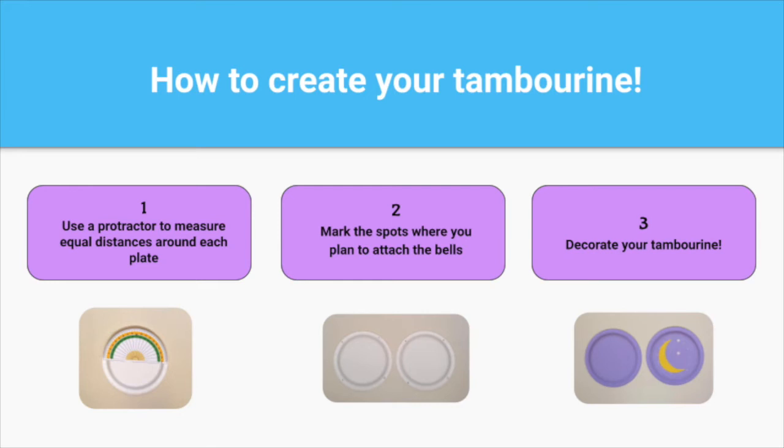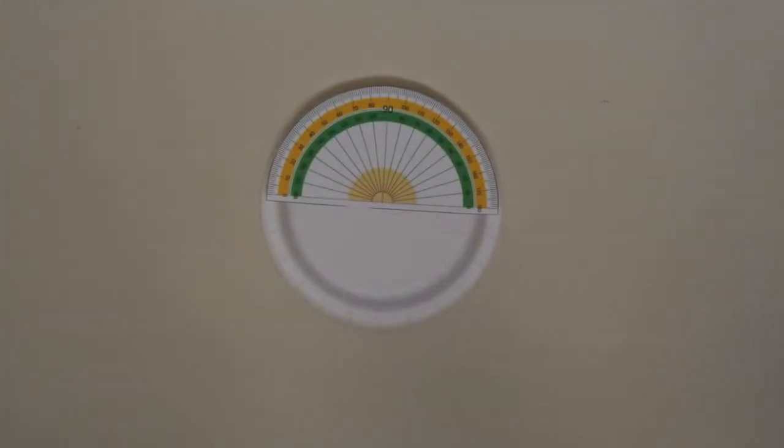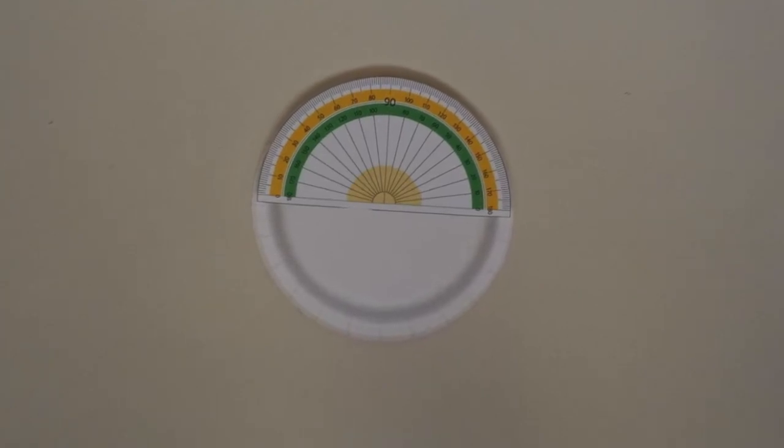The first thing you'll want to do is gather your materials. Then on each paper plate, use the protractor to calculate equal distances around the circle.